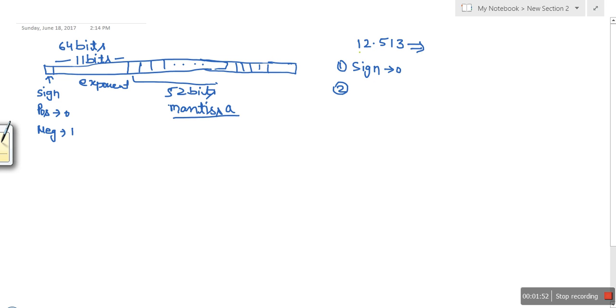How to find binary equivalent? First we write the binary of 12, which is 1010. Then we need to see what's the binary for .513, so here I'm going to show you the process.